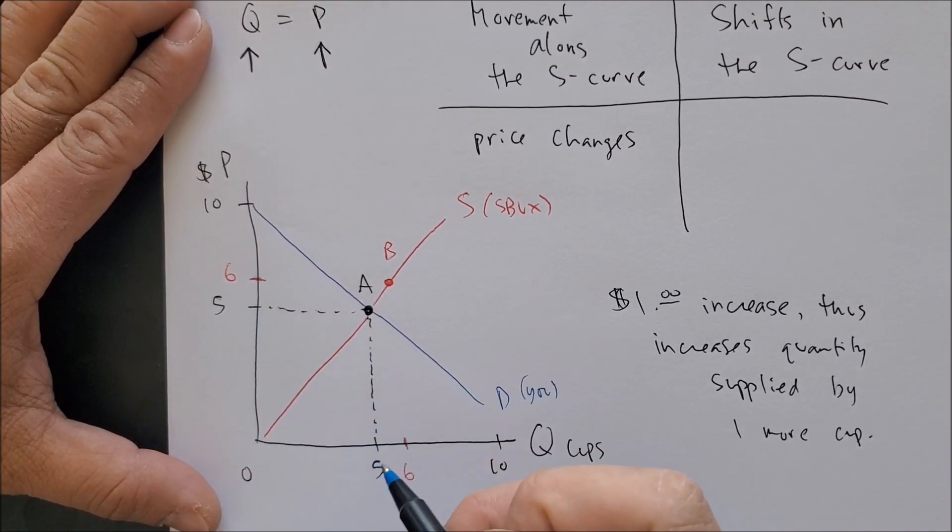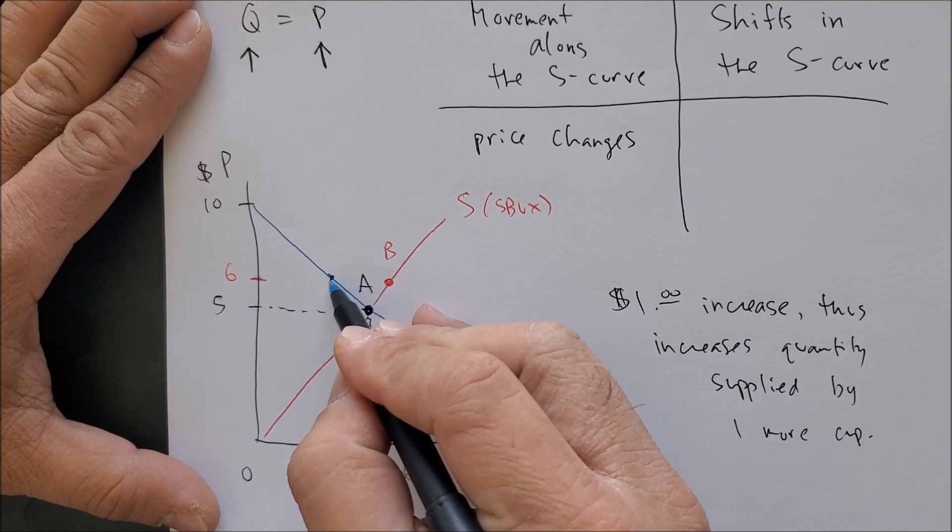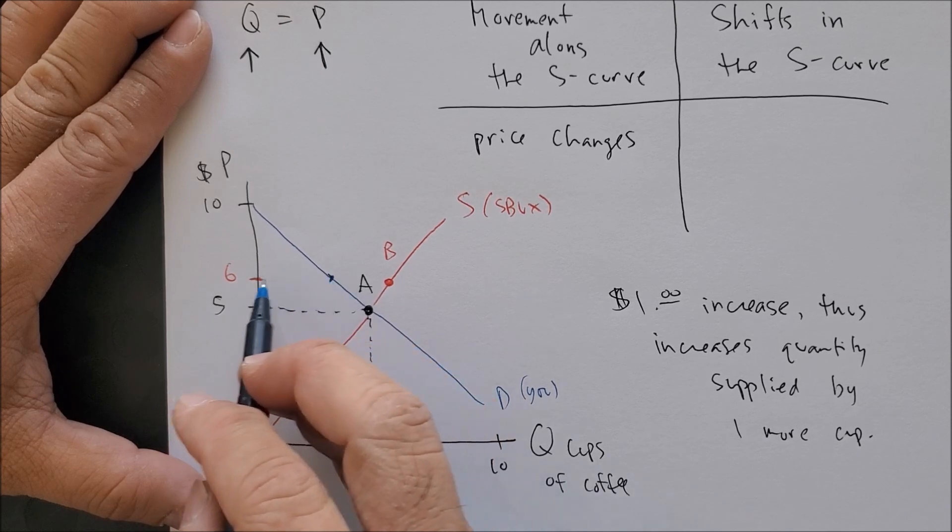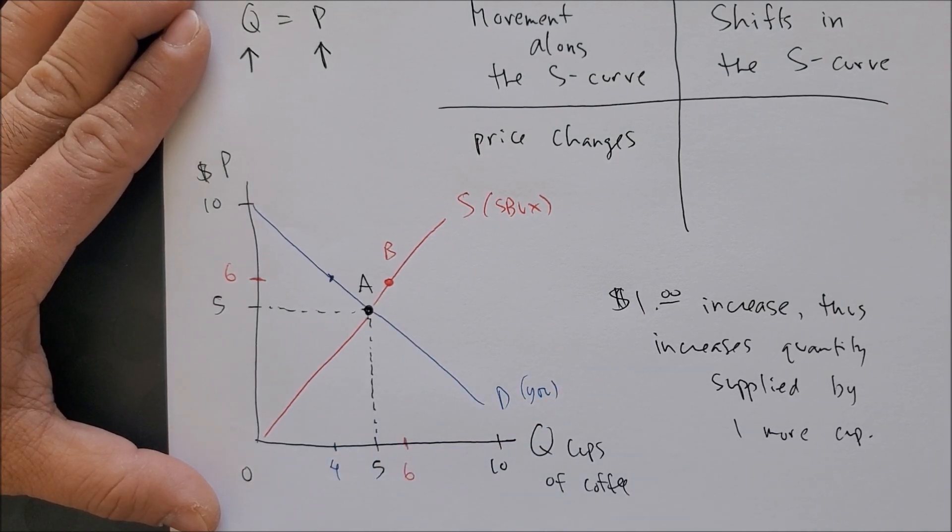But what about consumers? At a higher price, consumers are not going to really like the high price of coffee. At a higher price, you will demand less, and that would make sense for the law of demand.